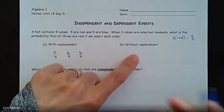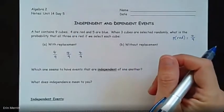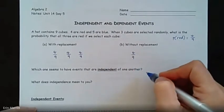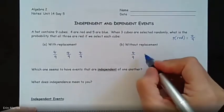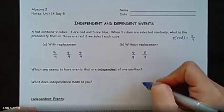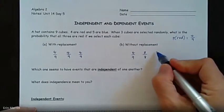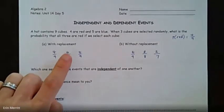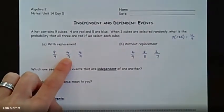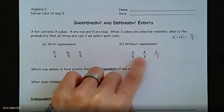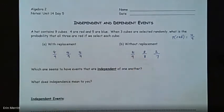Whereas without replacement, I take the cube out and it's no longer in there. So the first time there's a four-ninths chance, but the second time I go to pick, there's only three red cubes left and only eight cubes total — so it'd be three out of eight. Then the third time there'd be two red cubes left and only seven to choose from. So the numbers change.